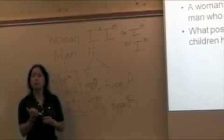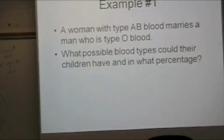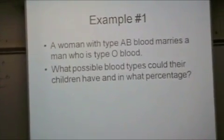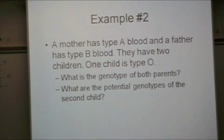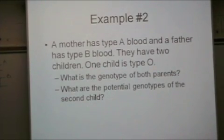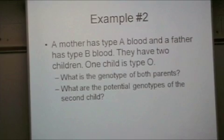Let's do one more example. The second example says a mother has type A blood and a father has type B blood. They have two children. One child has type O blood. The first question asks what is the genotype of the parents, and the second asks what are the potential genotypes of their second child.